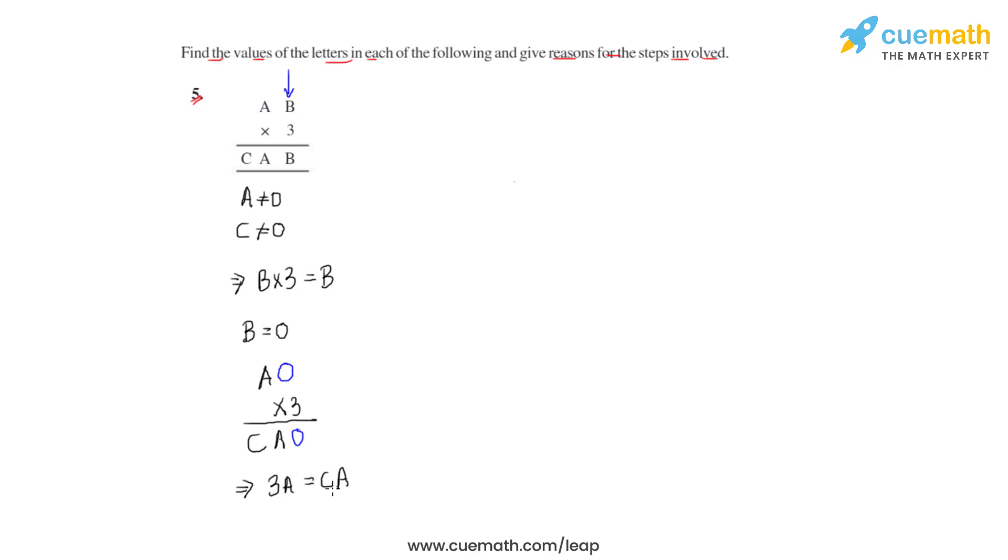If we take this product forward, we'll see that 3 times A equals CA. So when 3 and A are multiplied, we get a number where A is in the units place, which is only possible if A equals zero or A equals 5. But since we've already seen that A cannot equal zero,